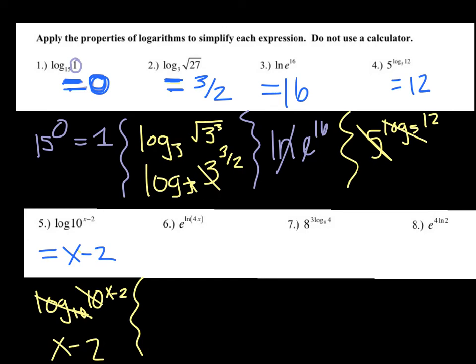Number six: e to the power of ln of 4x. Remember, e and ln undo each other — they are inverses of one another — so e and ln cancel and you're left with 4x.